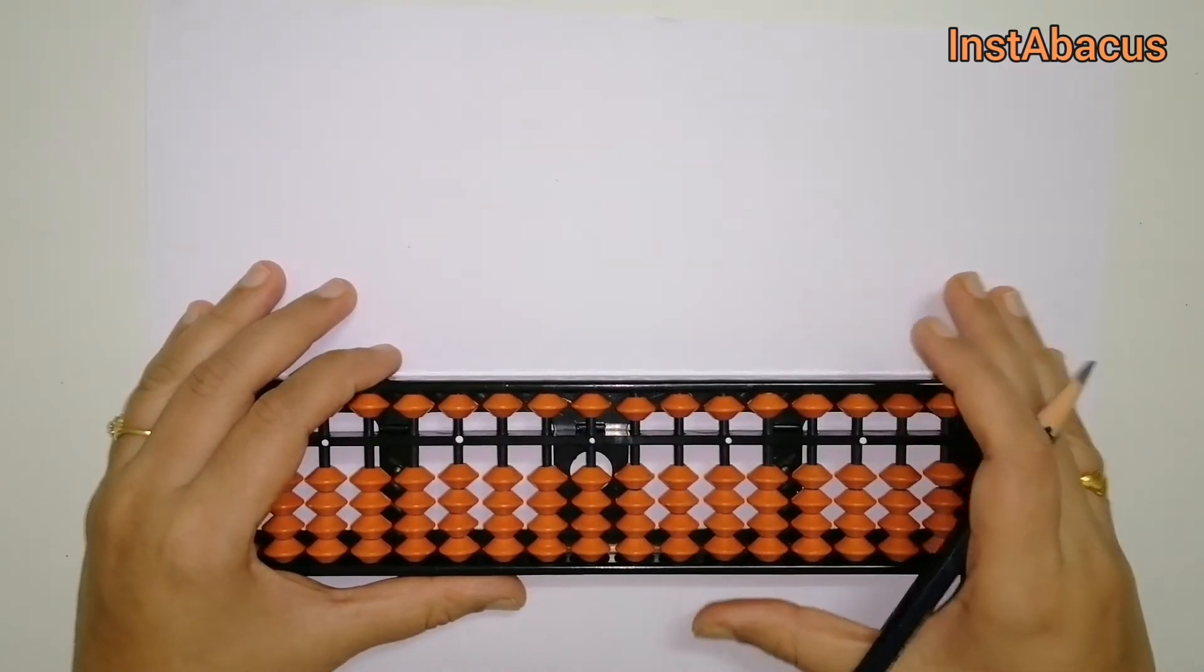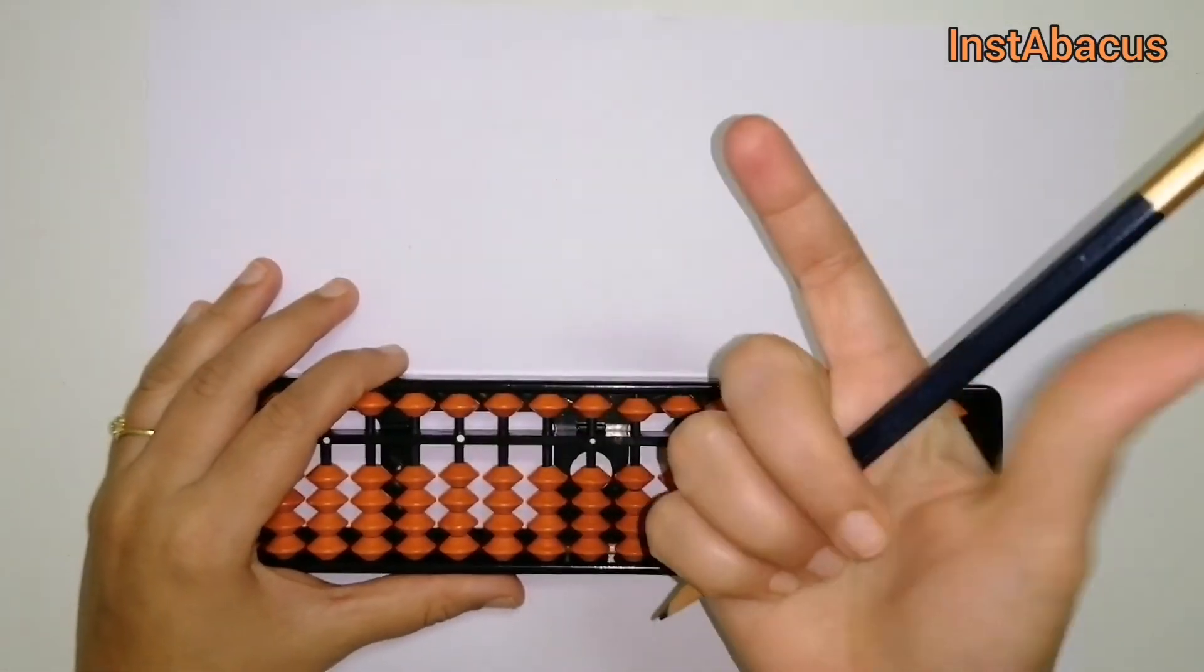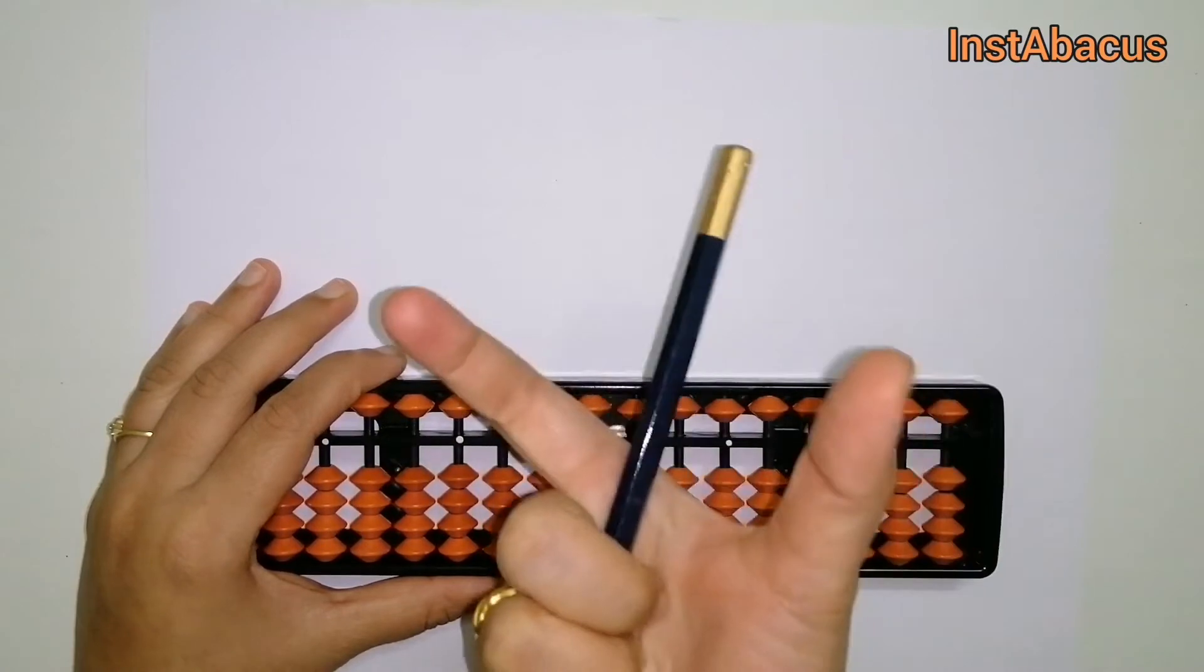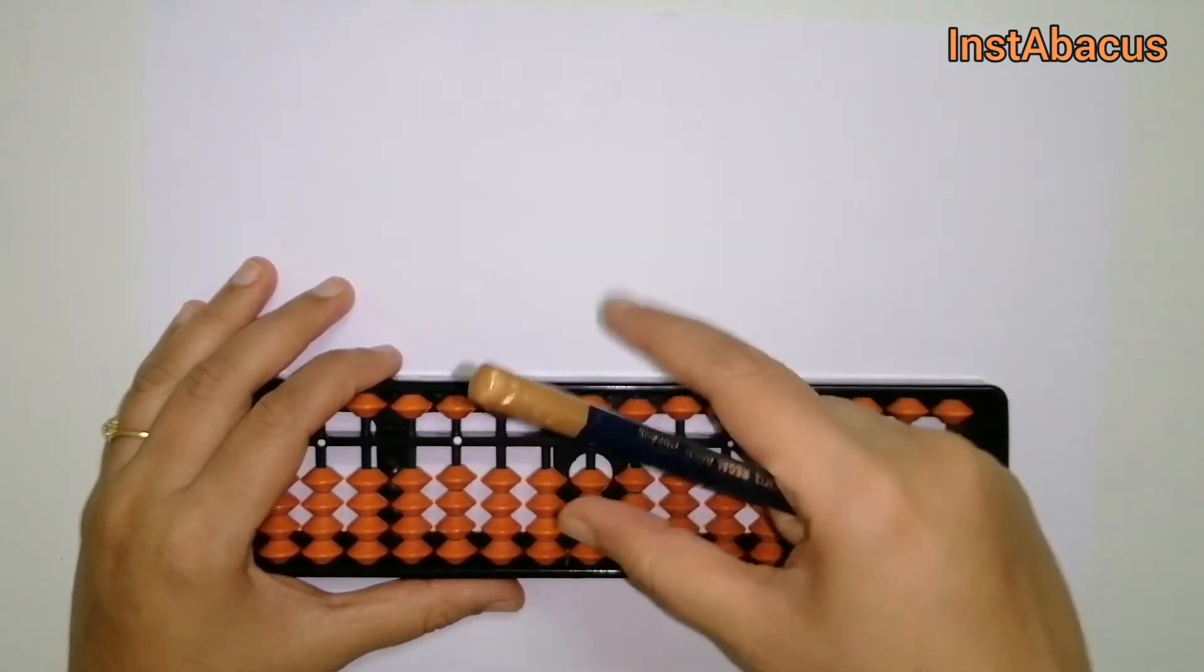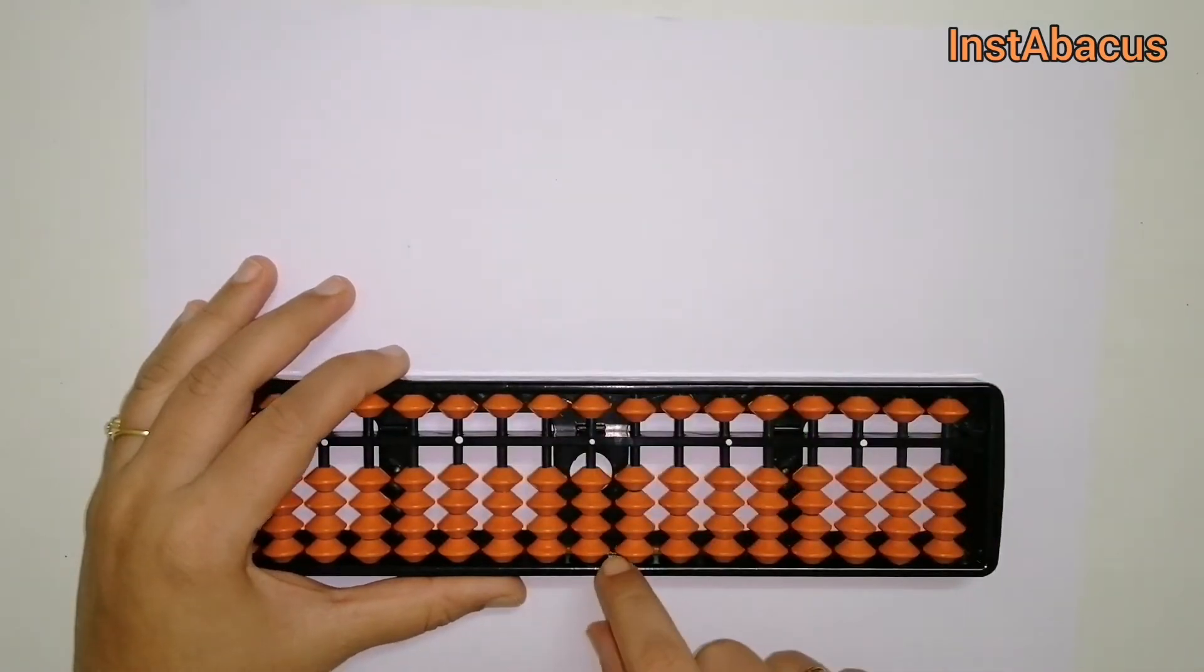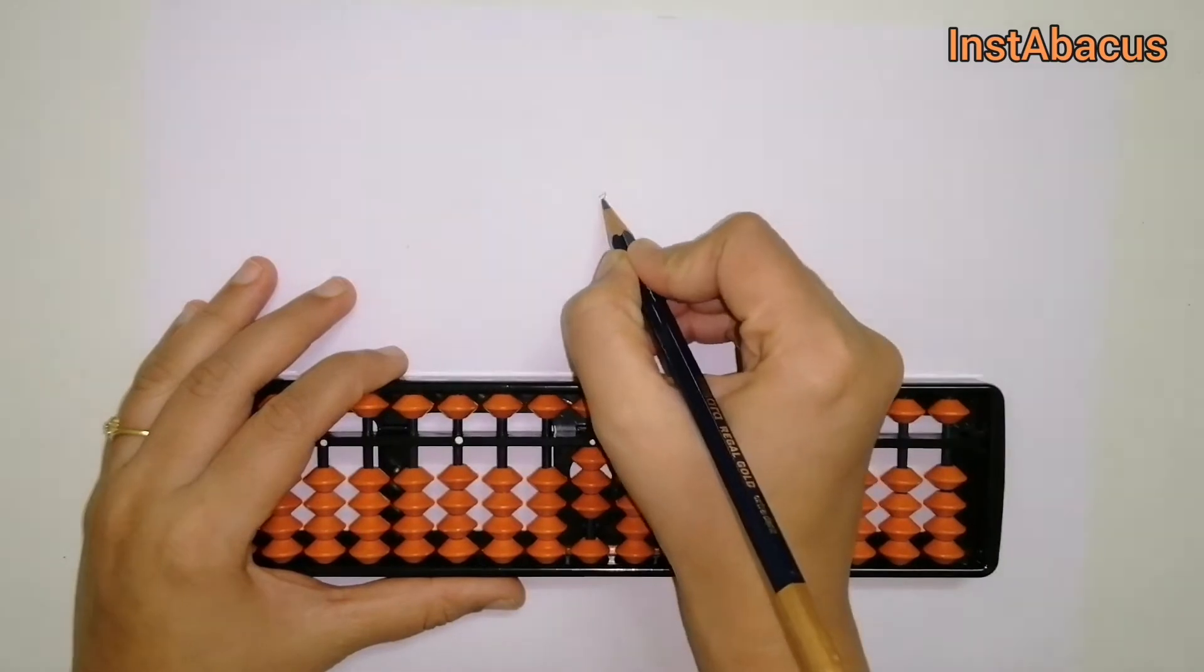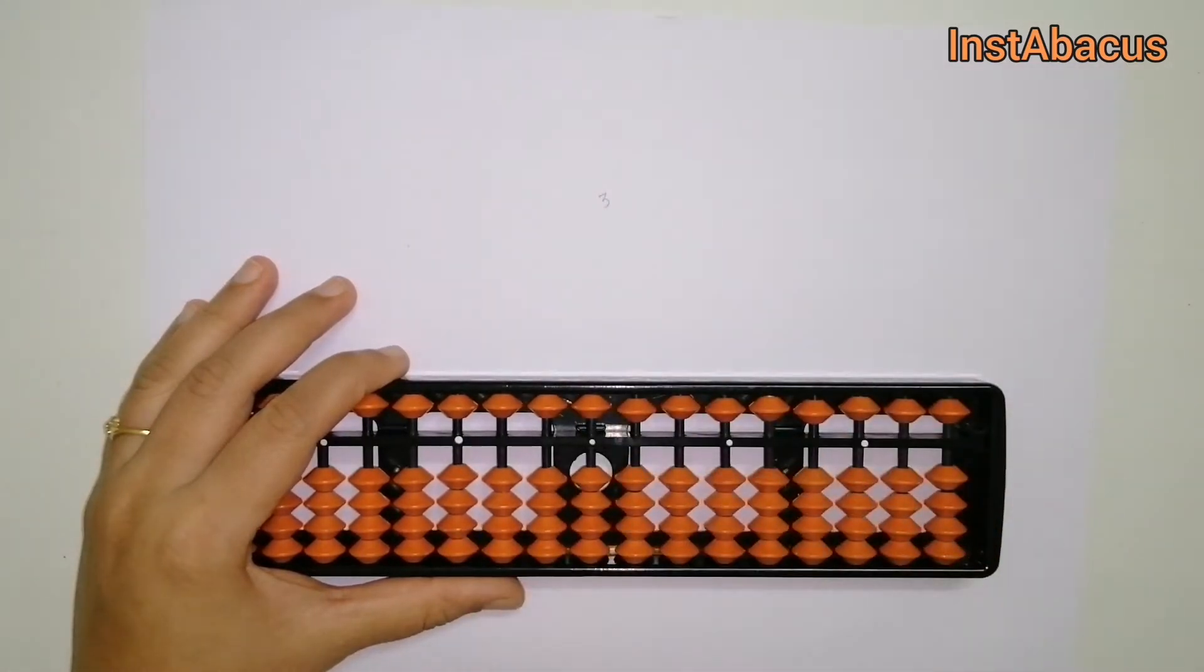Okay, so for the right hand, we're going to hold the pencil like this with these three fingers, and these two fingers will remain free to move on the abacus. All right, so let's go ahead. Three, eight...